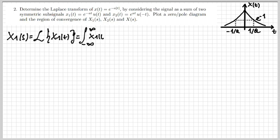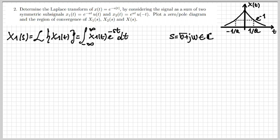I'll do that by calculating first the Laplace transform of x1(t) and then of x2(t), and then sum them up. The Laplace transform is the integral of our signal times e to the minus st, dt. Here s is a complex variable, which I can represent as sigma plus j-omega, where sigma is the real part — very important for studying convergence — and j-omega is the imaginary part.